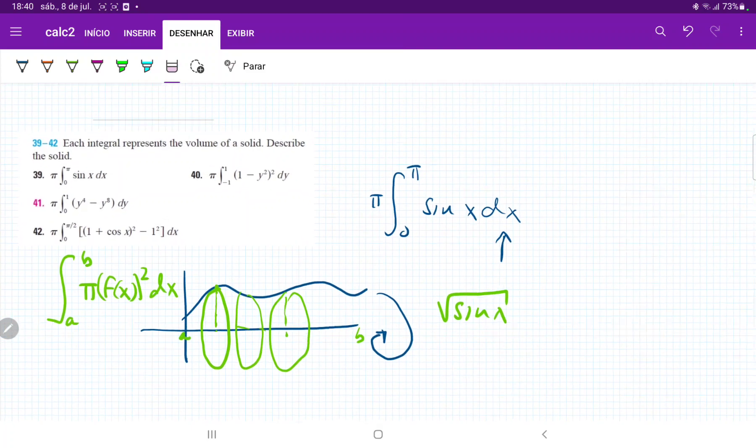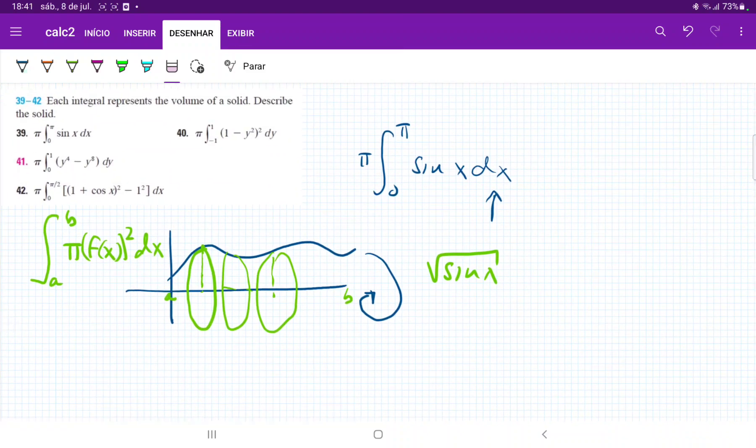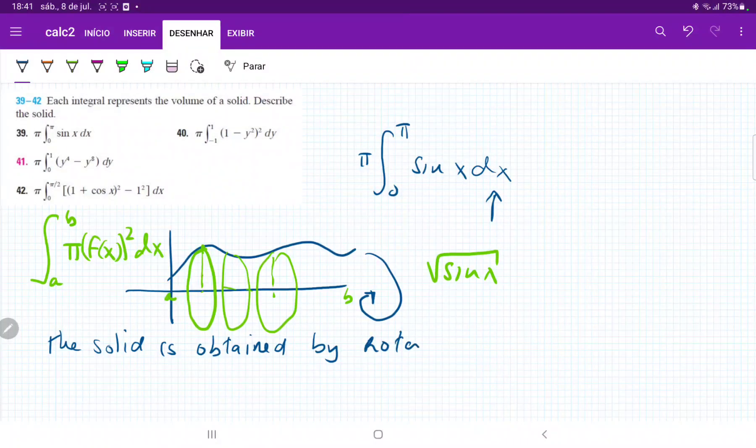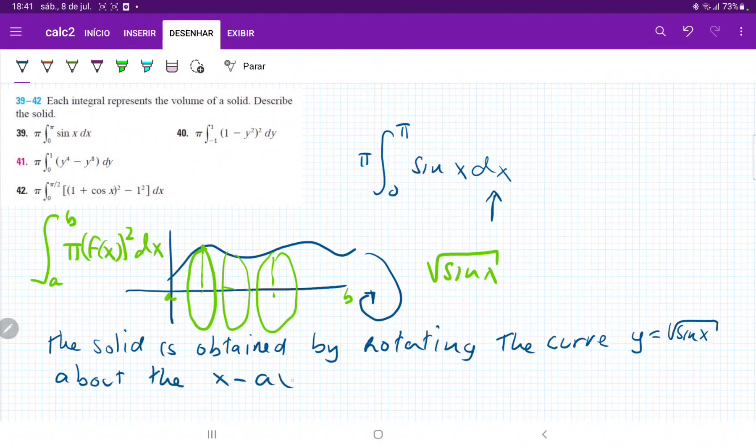So basically, from here, we can say that describe the solid. So the solid is obtained by rotating the curve. The curve y is equal to square root of sine of x about the x-axis from 0 to π. And that's the solid that we get.